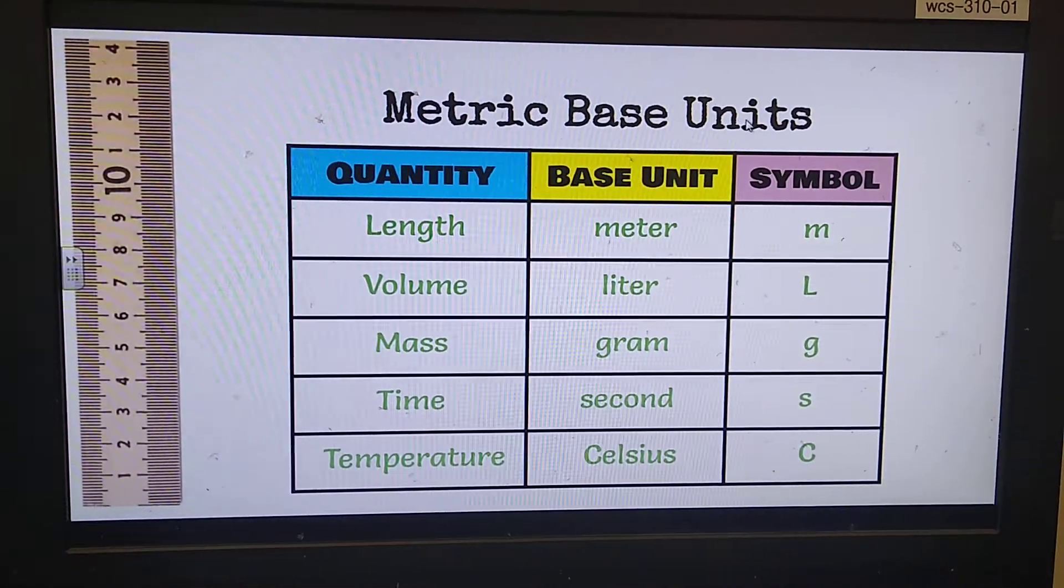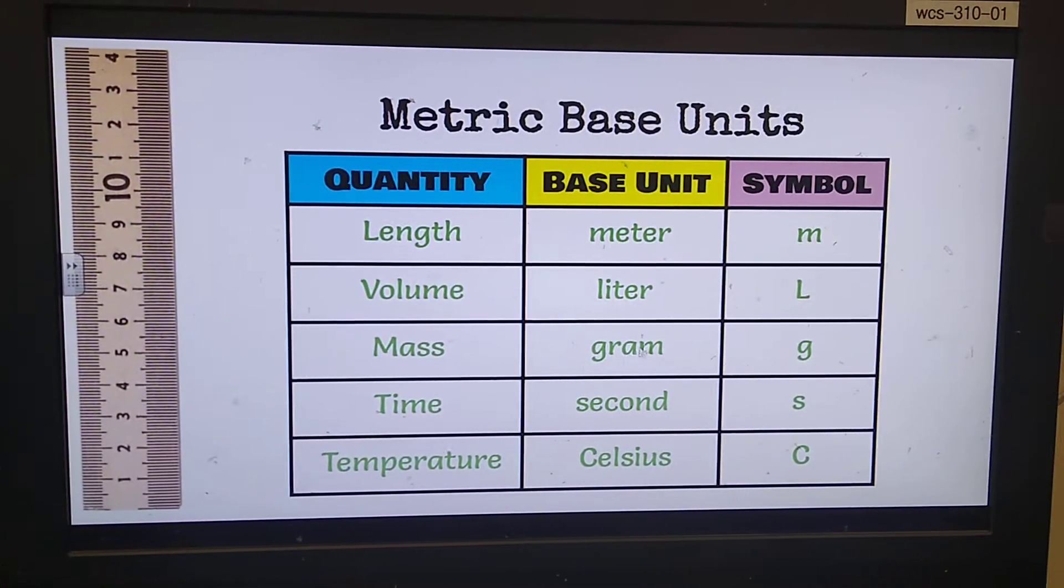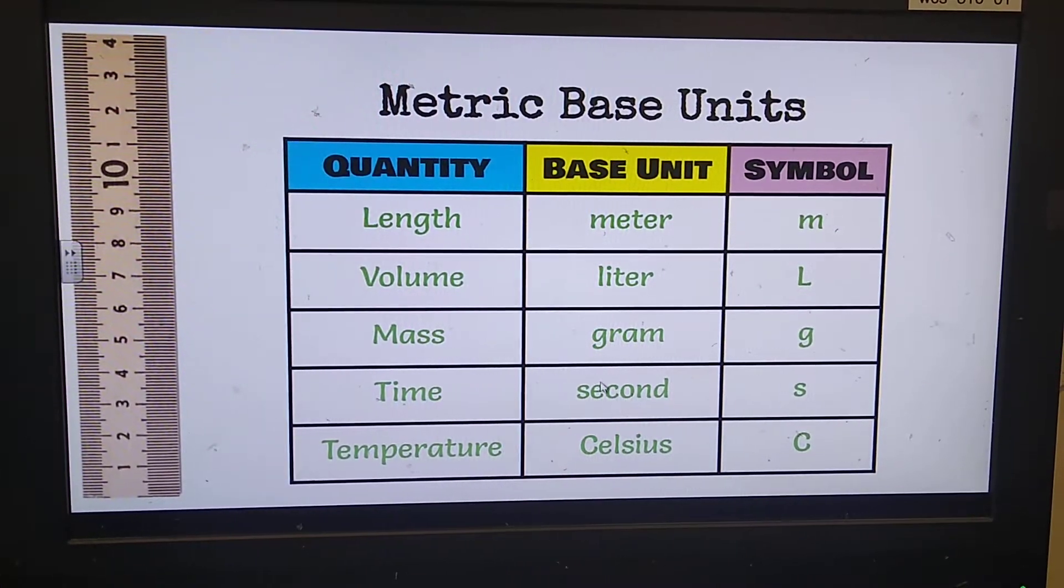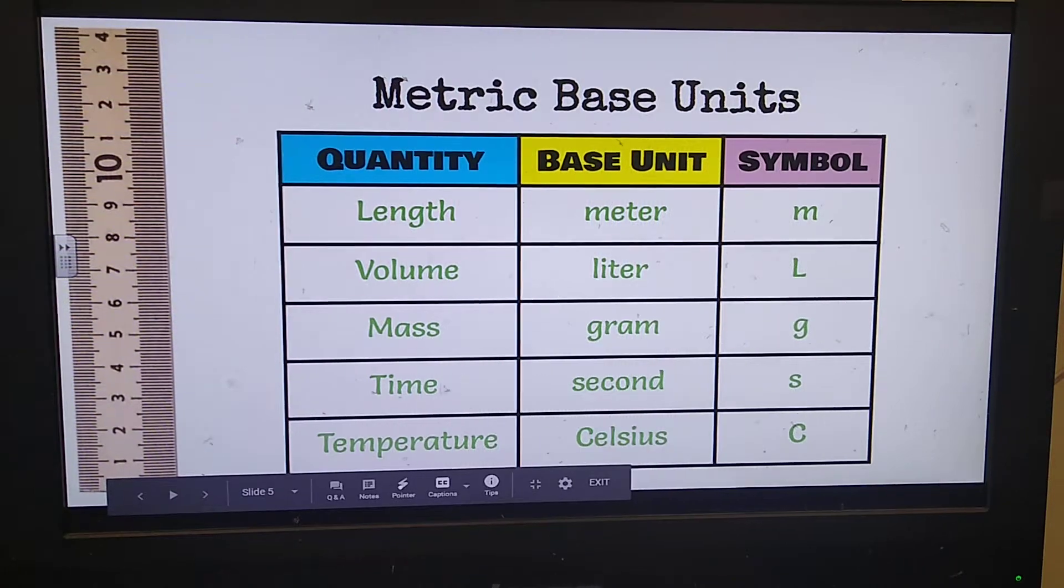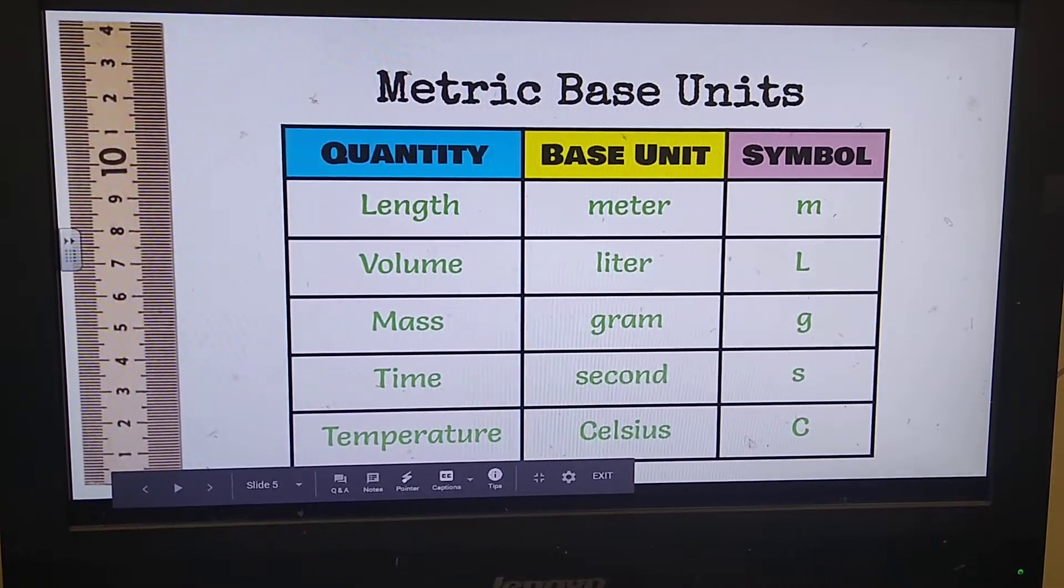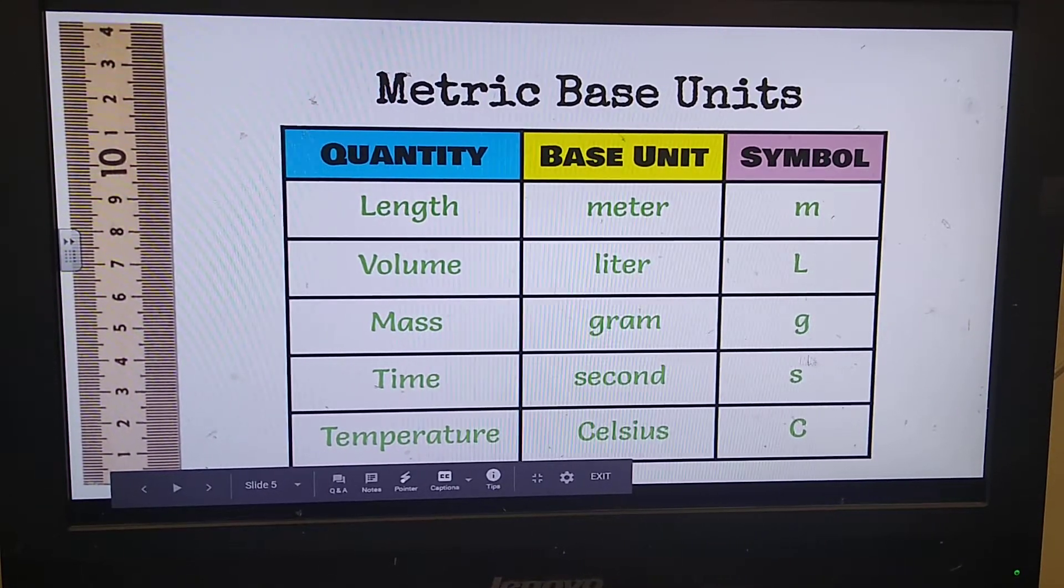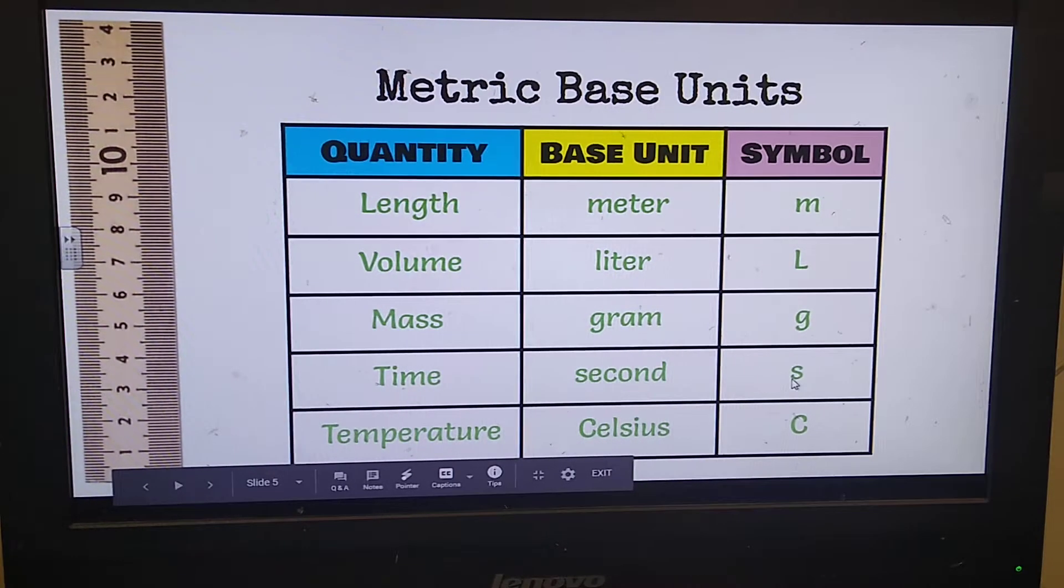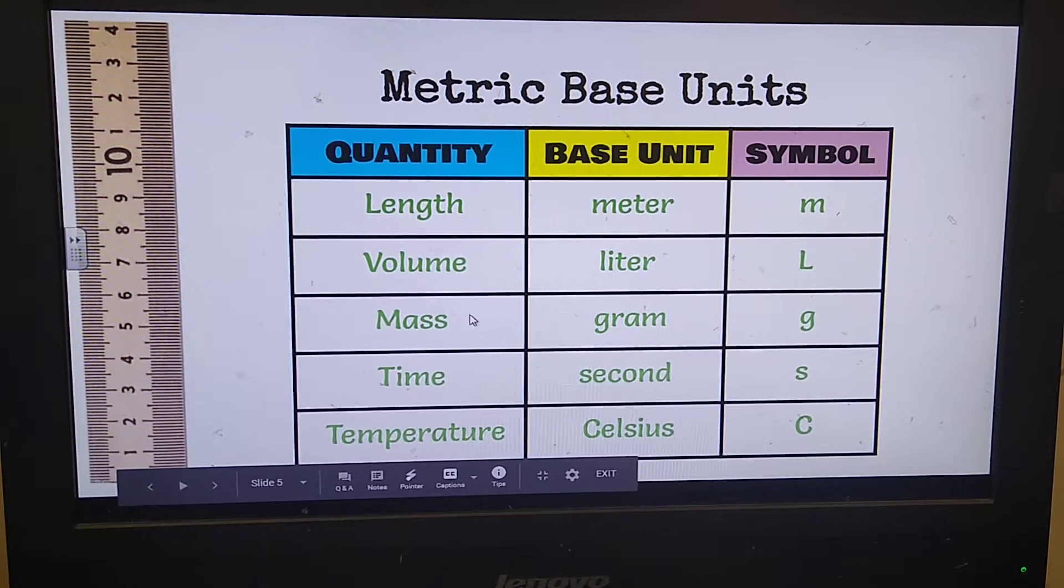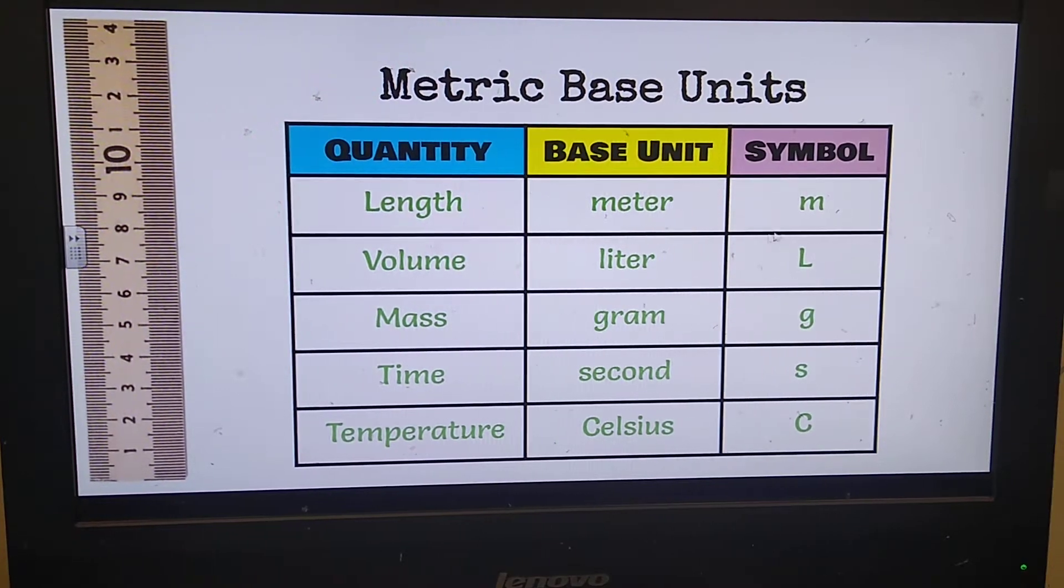And then our base units that we were talking about—the likes, makes, and gulps—meters, liters, and grams. And then there's also seconds and Celsius, but when we talk about time and temperature, we really don't use the prefixes in front of it too many times in our science class. Sometimes for milliseconds we'll do that, but it's very rare. It's length, volume, and mass: meters, liters, and grams. You'll notice the capital L.